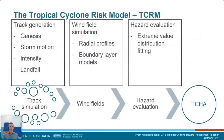The Tropical Cyclone Risk Model is based on an autoregressive model. It goes through track generation — genesis, storm motion, intensity and landfall — wind field simulation and boundary layer models to simulate the wind fields, and then hazard evaluation through the extreme value distribution. This gives us the Tropical Cyclone Hazard Assessment.